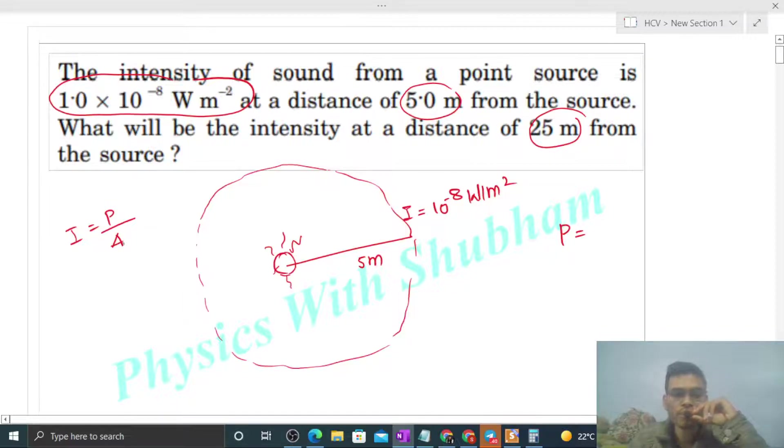So you can see, power will be simply intensity into area. Now intensity is given, and what will be the area of this sphere? That will be 4 pi r square. R will be 5, so 25. Right? So calculate the power. Intensity is 10 raised to the power minus 8 into 4 into pi into 25.